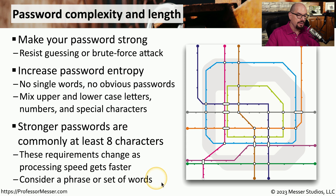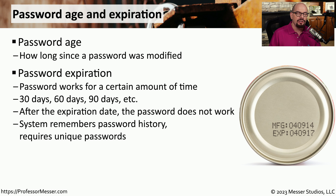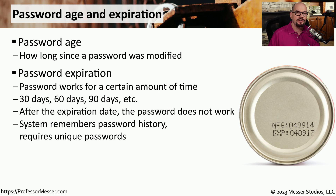In some cases, we're encouraged to use a phrase or set of words so that we have a much longer password. Once a password is set, a timer starts that defines the password age. This password age is then evaluated after a certain duration to determine whether we would want to change that password. For example, many passwords will expire in 30 days, 60 days, 90 days, or some other value. You've probably seen notifications that remind you that your password is going to expire in a certain number of days.